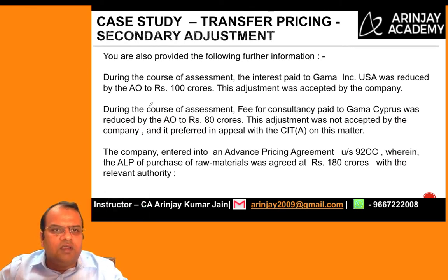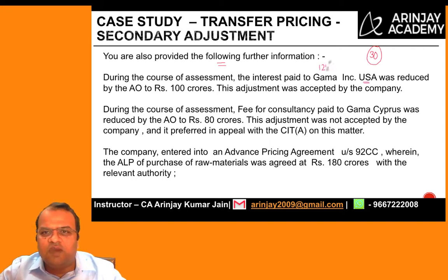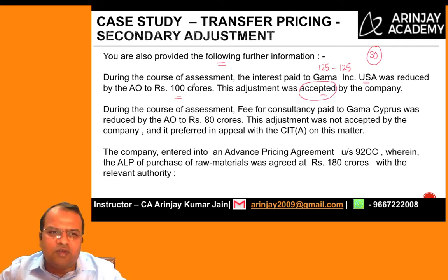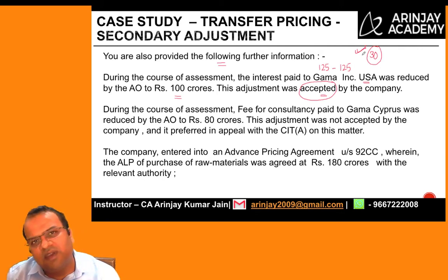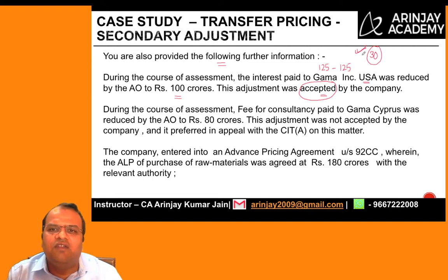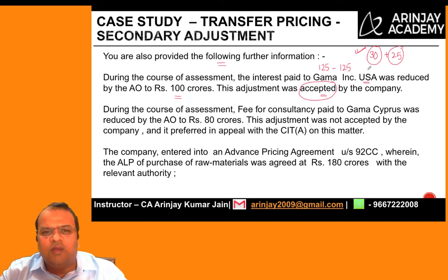The suo-motu adjustment is 30 crores. During the course of assessment, interest paid to Gamma Inc USA of 125 crores was reduced by the AO to 100 crores — a downward adjustment of 25 crores — and this was accepted by the assessee. Adjustments made by the tax office and accepted by the assessee are also covered under secondary adjustment, so this 25 crores will be included.